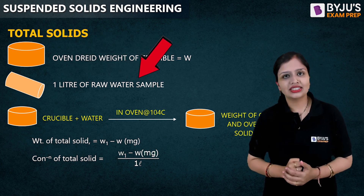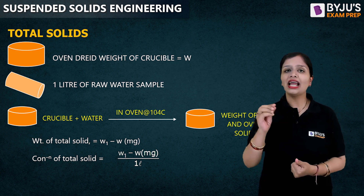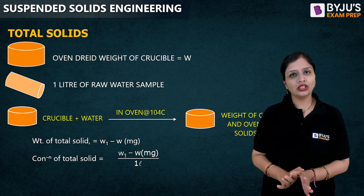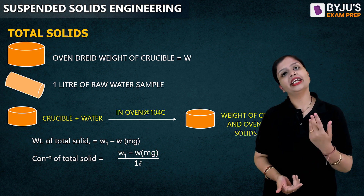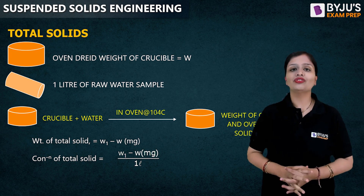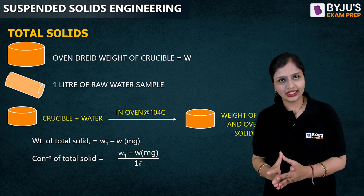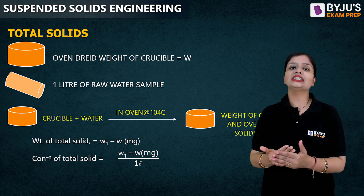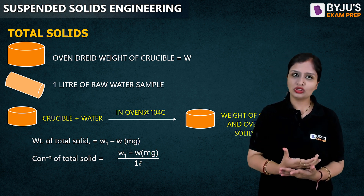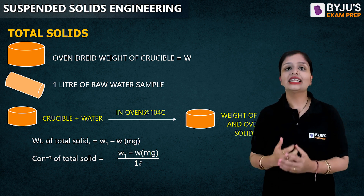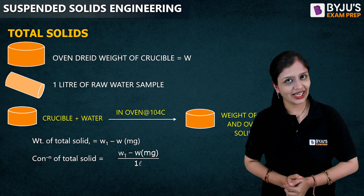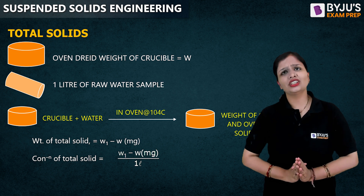I will be taking one liter of water sample. I will add the water to this crucible and put it in the oven at 104°C for 24 hours. The water will vaporize; after that I will be getting the crucible as well as the oven-dried solids — technically that is total solids. I will term this weight W1. The weight of total solids will be W1 minus W (the weight of the crucible). To get concentration, I divide by the volume of sample taken — here, 1 liter. That was regarding total solids.